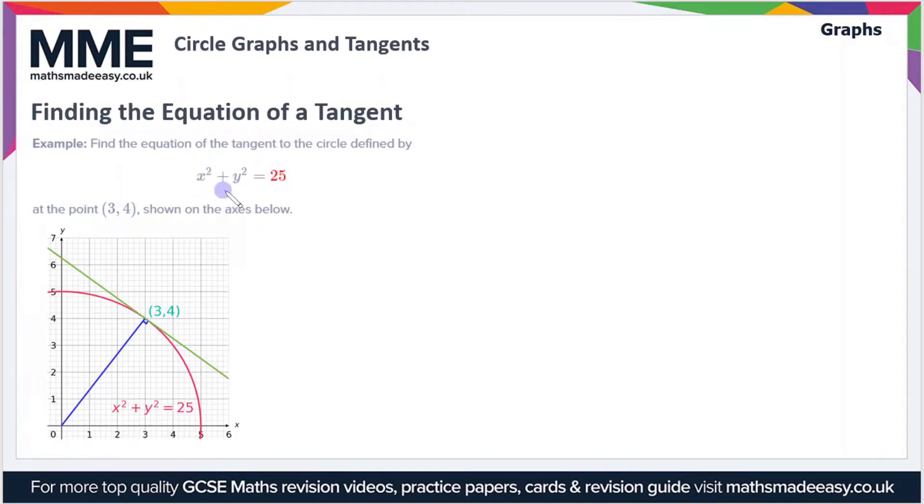There's a lot to take in here, but first of all, this equation x squared plus y squared equals 25, well if you remember the general form x squared plus y squared equals r squared, that means r squared is 25, so we can say that r equals five. In this graph here, that's this blue line here, so that's a radius of five.